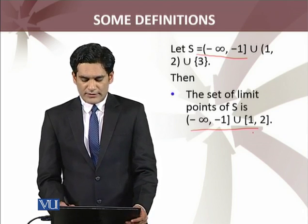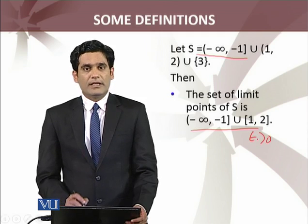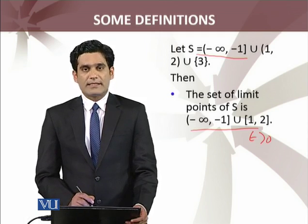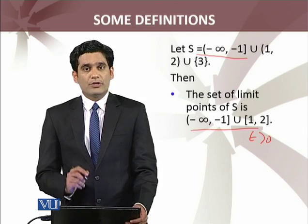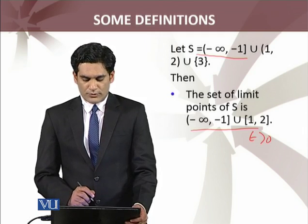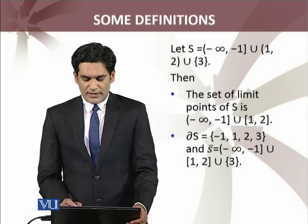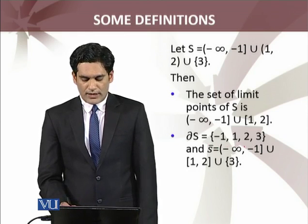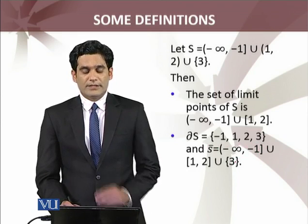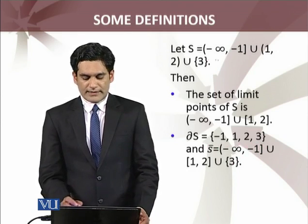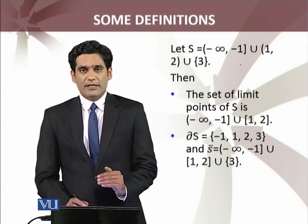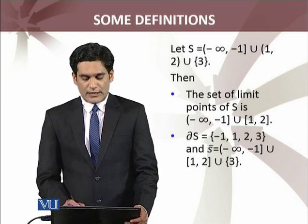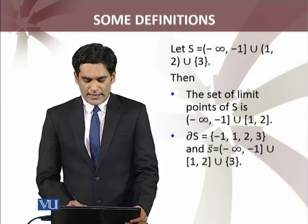The boundary points of S are: -1, 1, 2, and 3. ये boundary points हैं इस set S के। Boundary point की definition के according आप चेक कर सकते हैं कि these are the only boundary points of that set S.